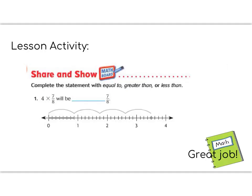For this lesson, your lesson activity is the first share and show question on the top of the next page — we're going to be modeling 4 times 7 eighths. We're going to make 4 jumps of 7 eighths: one group of 7 eighths, two groups, three groups, four groups. If we multiply 4 times 7 over 8, that's 28 eighths. So we know that is going to be greater than the original 7 eighths. Go ahead and fill in that greater than, and be prepared to show your teacher at the teacher table. Great job, fifth graders.